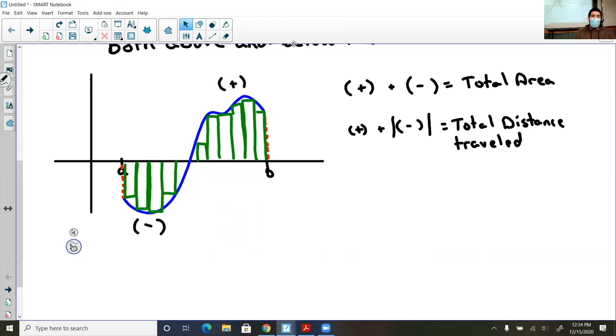So it's possible that if your positive area was more than your negative area, your total area would be positive. If your negative area was bigger than your positive area, then your total area would be negative. So that's what Riemann sums would allow us to figure out.